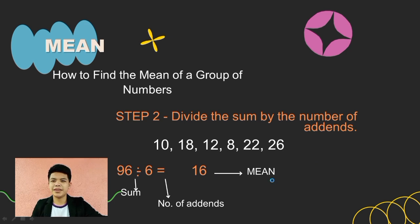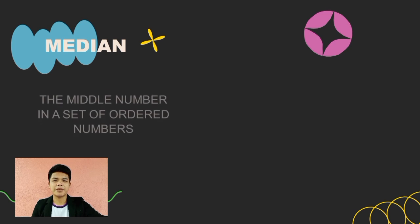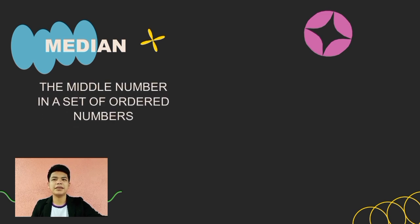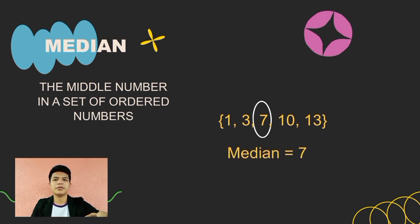Let's proceed to the second measure of central tendency, which is the median. What is median? Median is the middle number in a set of ordered numbers. Let's have this example: 1, 3, 7, 10, and 13. The median here is 7. Based on the definition, the median is the middle number, and the middle number here is 7.